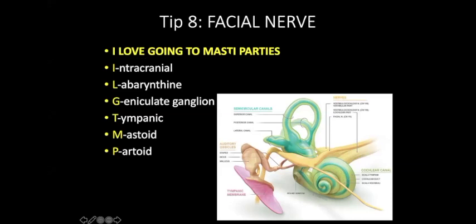I use the mnemonic 'I love going to masti parties' to remember the parts of the facial nerve. Masti means having fun in Hindi. I = Intracranial; L = Labyrinthine part; G = Geniculate ganglion, where the GSPN branch arises; T = Tympanic or horizontal part; then the second genu; M = Mastoid part; and finally P = Parotid part. Remember: intracranial, labyrinthine, geniculate ganglion, tympanic, mastoid, and parotid parts.